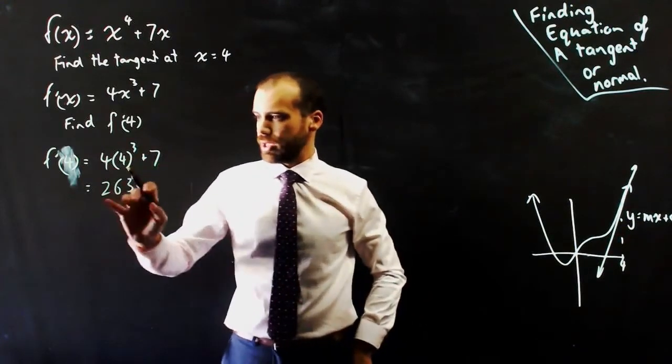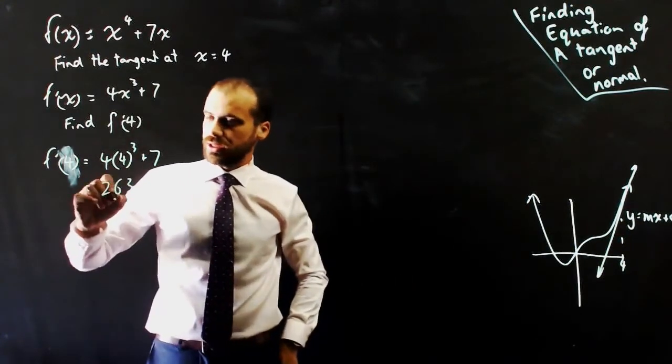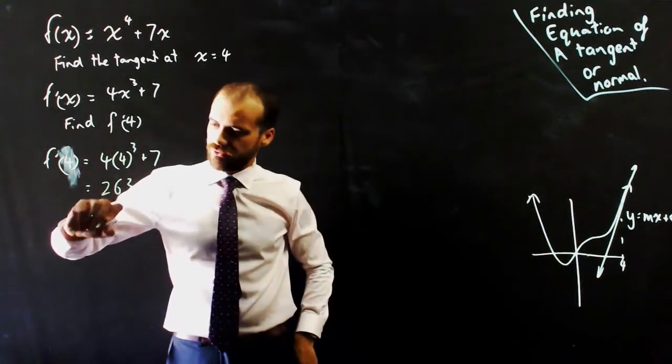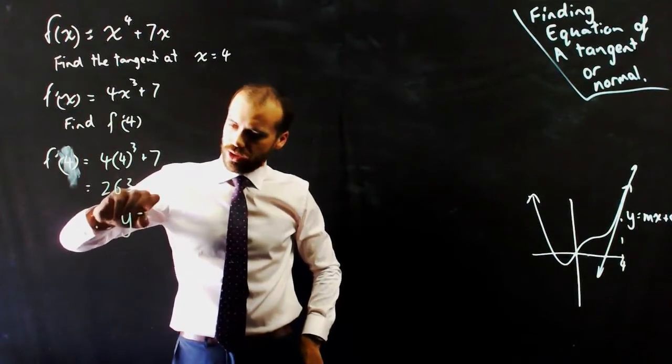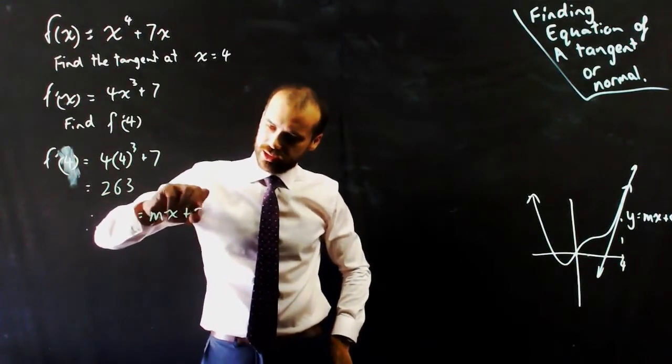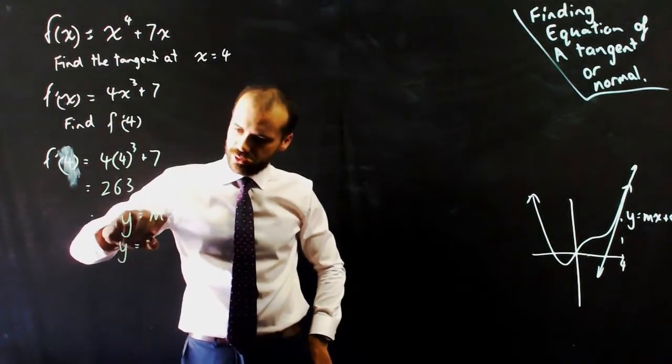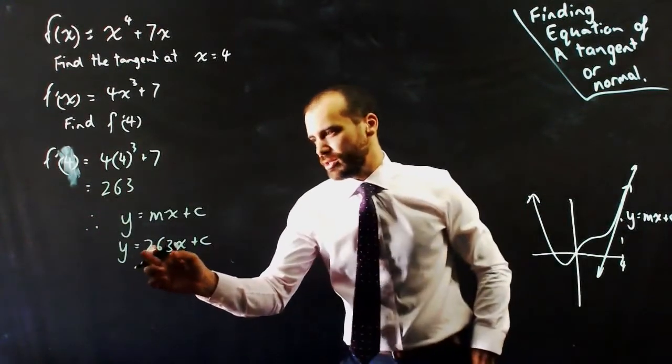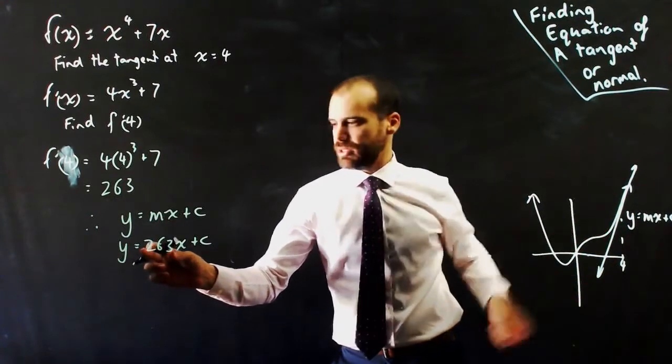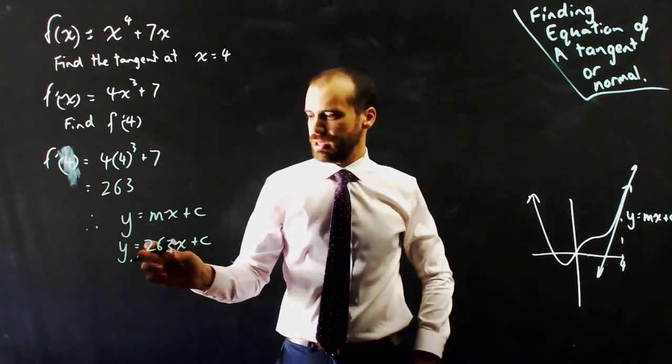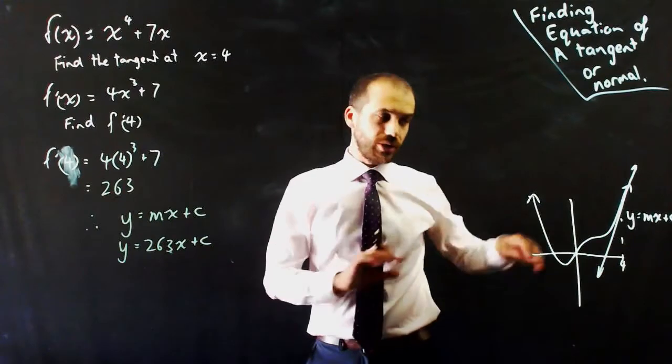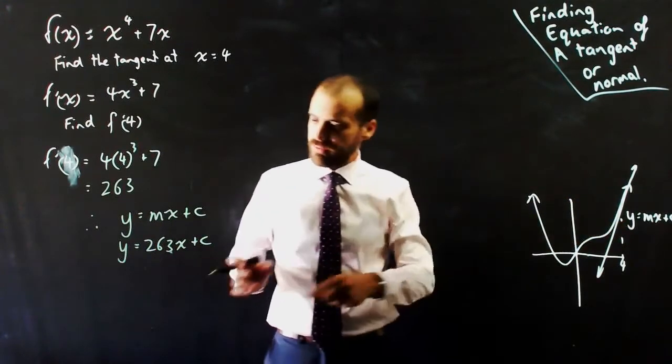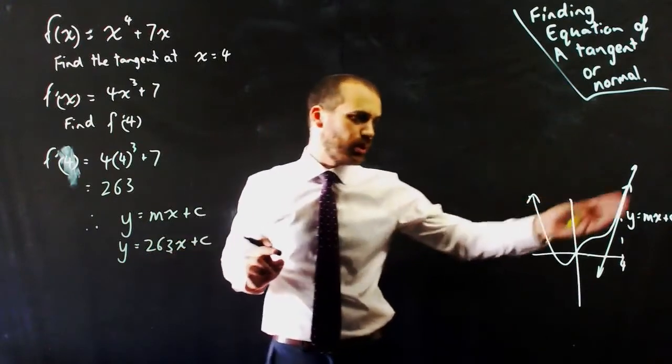It's 263. So now I have this straight line. Therefore, y = mx + c, y = 263x + c. So I'm saying I know the gradient of that line is 263. If I know the c value, I'll know everything there is to know about the line.